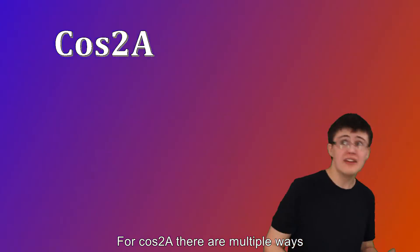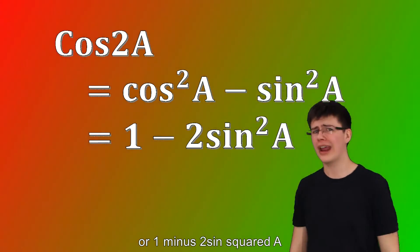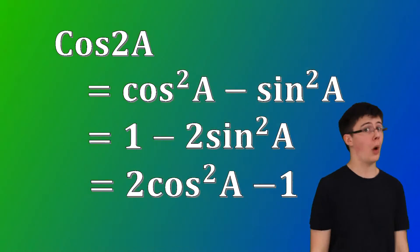For cos two A, there are multiple ways. Cos squared A minus sine squared A, or one minus two sine squared A. And if those two still won't get it done, just use two cos squared A minus one.